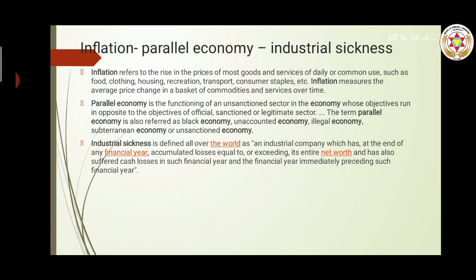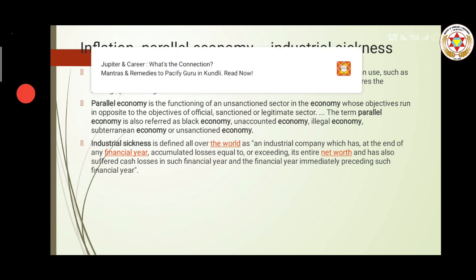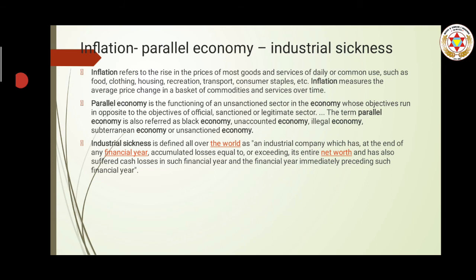Parallel economy is a condition in which illegal activities take place. It is the functioning of an unsanctioned sector in the economy whose objectives run opposite to those of the official, legitimate sector. Parallel economy basically refers to unaccounted and illegal activities done to avoid taxes — these are illegal and unsanctioned activities that run side by side with normal economic activities.